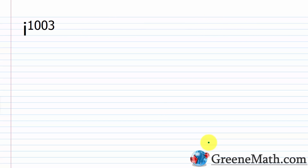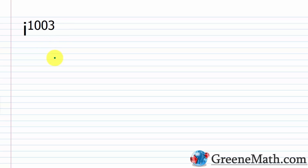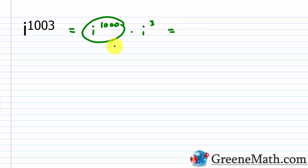What about i raised to the power of 1,003? Looking at the final two digits, 03 is not divisible by 4. Going down: 2 isn't, 1 isn't, but 0 is — meaning 1,000 is divisible by 4. So I write this as i to the power of 1,000 times i to the power of 3. We know i to the 1,000th power is 1, so we have 1 times i cubed. By definition, i cubed is negative i, so the answer is negative i.